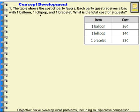One balloon costs 26 cents, so I'm going to represent that with a tape diagram. This rectangle represents the cost of one balloon. The bag also has one lollipop which is 14 cents, and one bracelet which costs 33 cents. Now this is the total cost of the party bag.